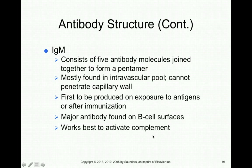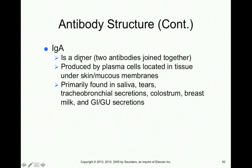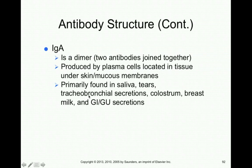Once IgM activates complement, this promotes the coagulation cascade, attracts immune cells to the infection site, and can activate the MAC attack complex to punch holes in foreign cells. IgA is a dimer — larger than IgG but smaller than IgM — produced by plasma cells in tissue like skin and mucous membranes. Because it's small, IgA can be found in secretions like saliva, tears, tracheobronchial secretions, colostrum, and breast milk.